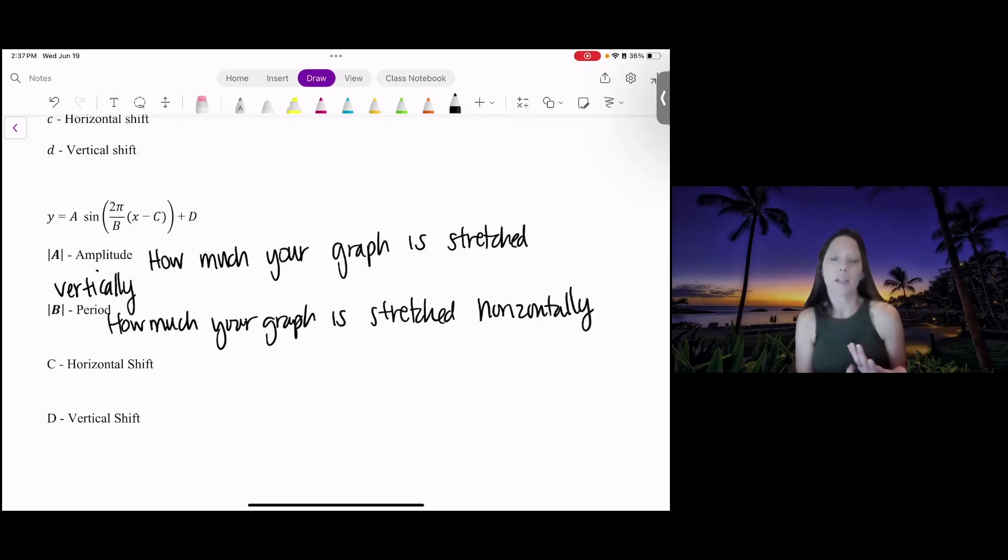Recall, if your a is negative, that's going to reflect it vertically. If your b is negative, you're going to reflect it horizontally.